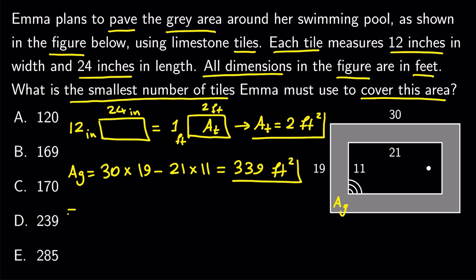Now, the number of tiles that we need to cover the gray area equals the gray area divided by the area of each tile, which is 339 divided by 2, which gives us 169.5, which is smaller than at least 170.